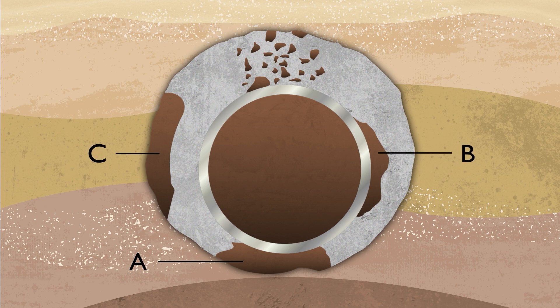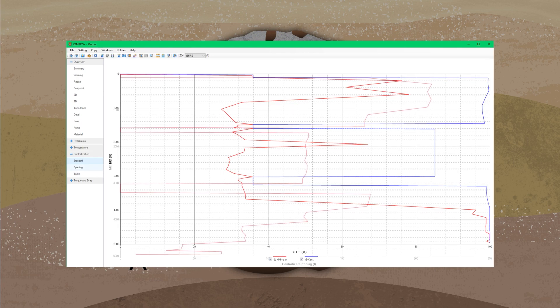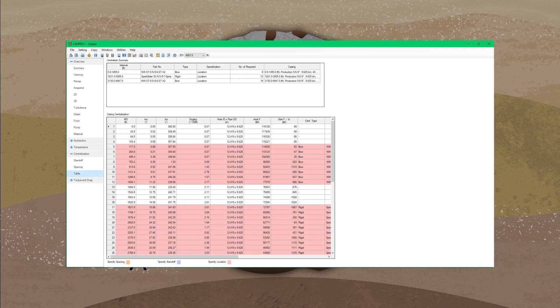Areas B, C, and D in the diagram also show possible displacement locations and types. A centralization simulation can be used to determine the optimum placement for centralizers.